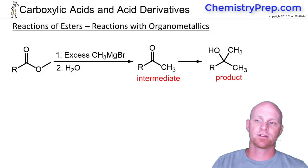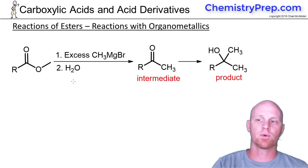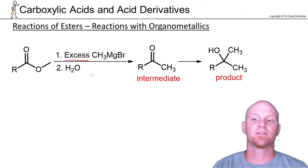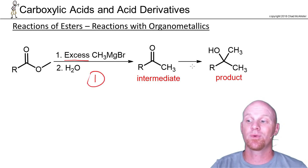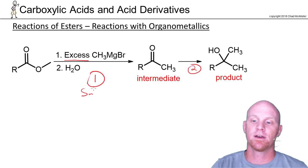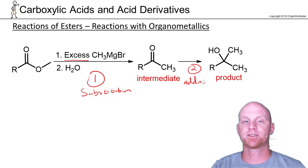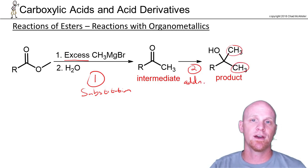We'll now dive into the reactions of esters, starting with organometallics just like we did with acid chlorides and anhydrides. We're going to use excess Grignard because it's going to react twice — not once. The first reaction is a substitution reaction, like we've seen with acid chlorides and anhydrides, and the second is an addition reaction. So you'll end up adding two equivalents of your Grignard reagent.